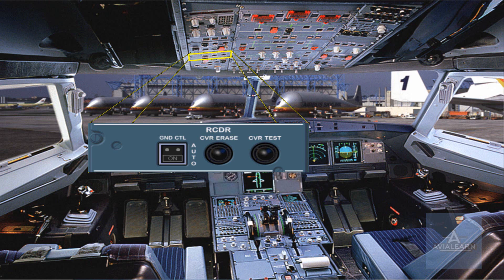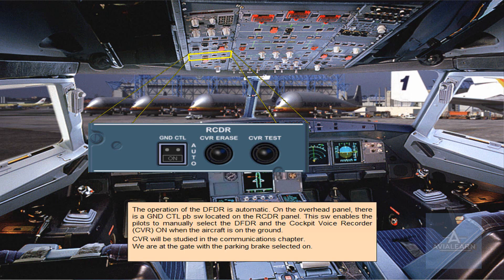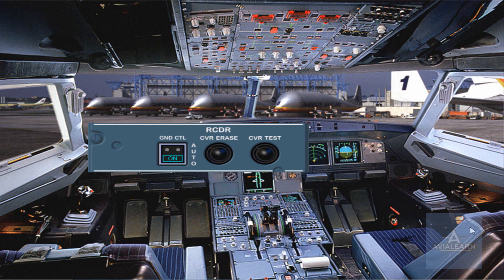We are at the gate with the parking brake selected on. Switch the DFDR on. A blue ON light appears, informing you that the DFDR is energized. This light will automatically extinguish as soon as the first engine is started. This happens because the DFDR will revert to auto mode and will operate continuously until 5 minutes after both engines are shut down.